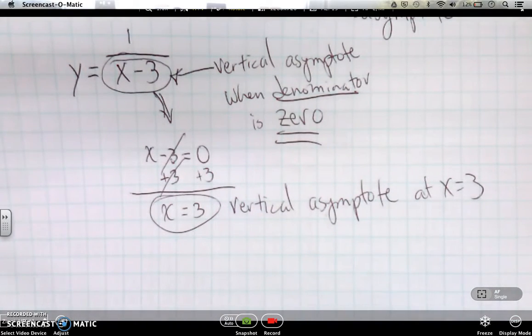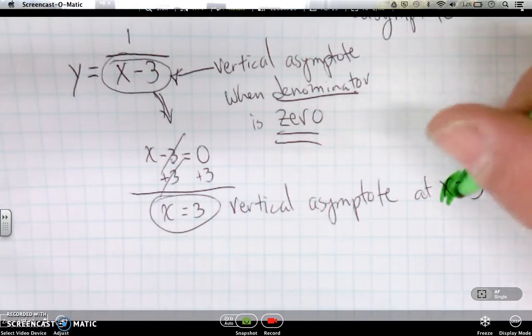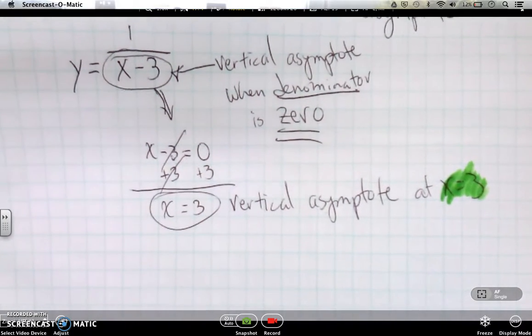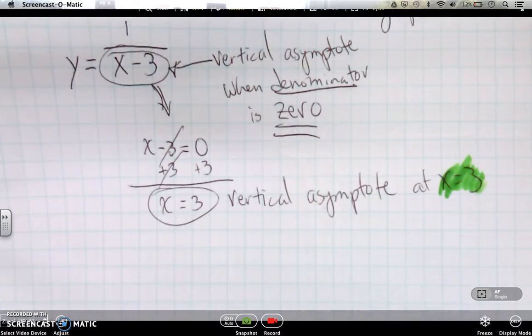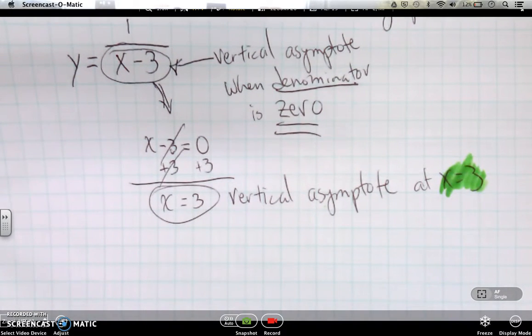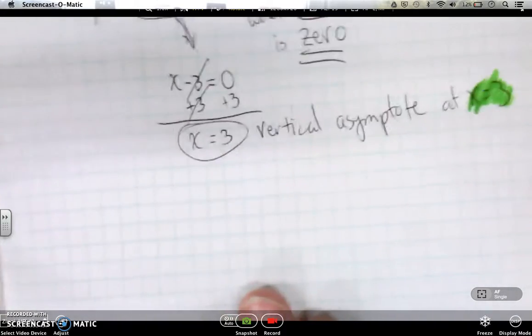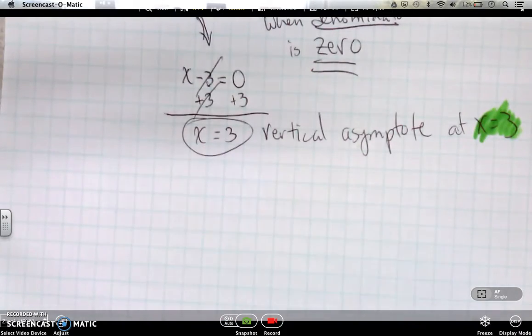So a vertical asymptote is going to be at x equals 3. That's our key thing. That's going to be a very, very key feature. So what we're doing is we're doing this before we actually graph it. We're finding the location of the asymptote because before we make a table of values, before we graph it, we need to know where are we centered. It'll make sense right now.